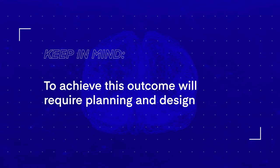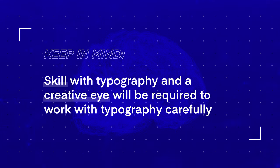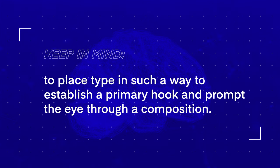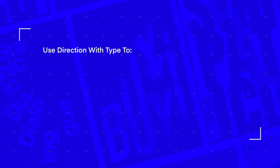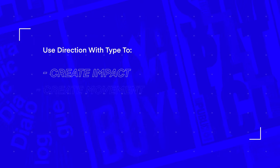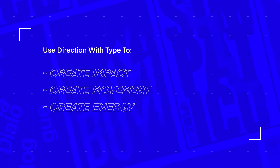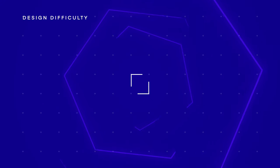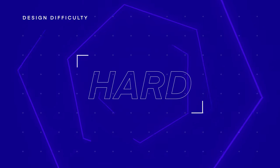To achieve this outcome will require planning and design. Skill with typography and a creative eye will be required to work with typography carefully to place type in such a way to establish a primary hook and prompt the eye through a composition. This approach can be taken when you want to create high impact, movement, and energy in your composition. If done well, this can create far more visually intriguing and appealing results. The difficulty level for this technique is hard.